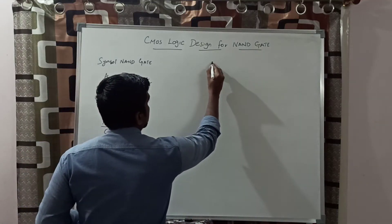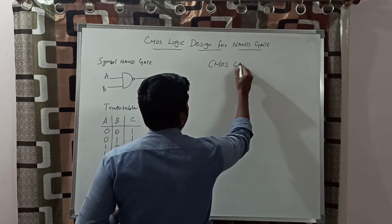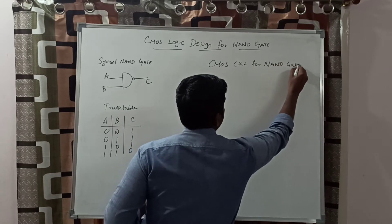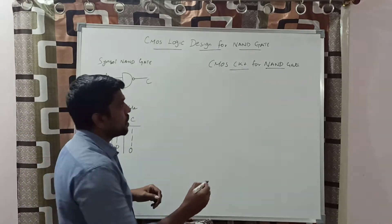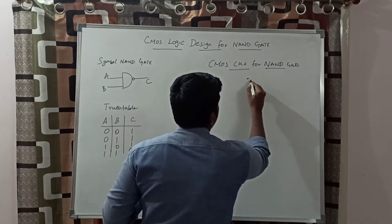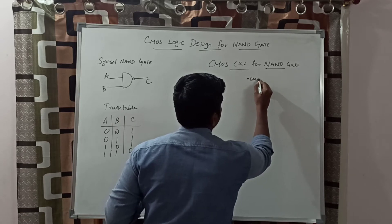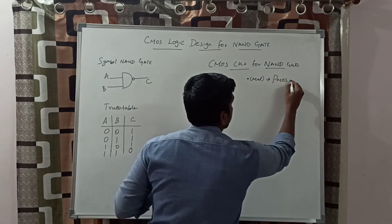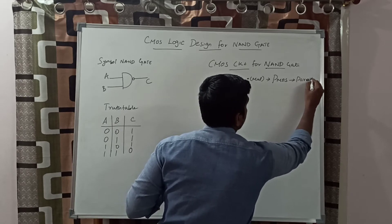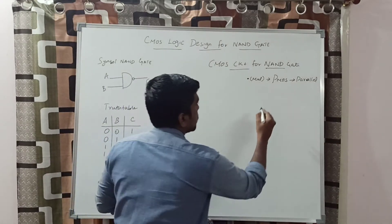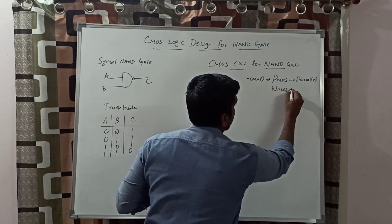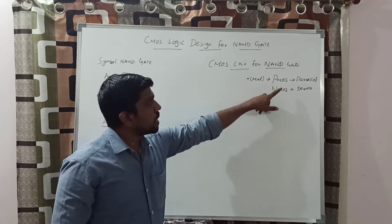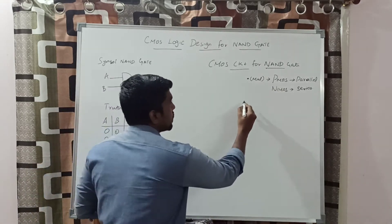Now draw the CMOS circuit for NAND gate. Before drawing the CMOS circuit, first know the rule. For a dot product or multiplication function: PMOS transistors connect in parallel, NMOS transistors connect in series. This is the first rule — in a multiplication function, PMOS connects parallel and NMOS connects in series.